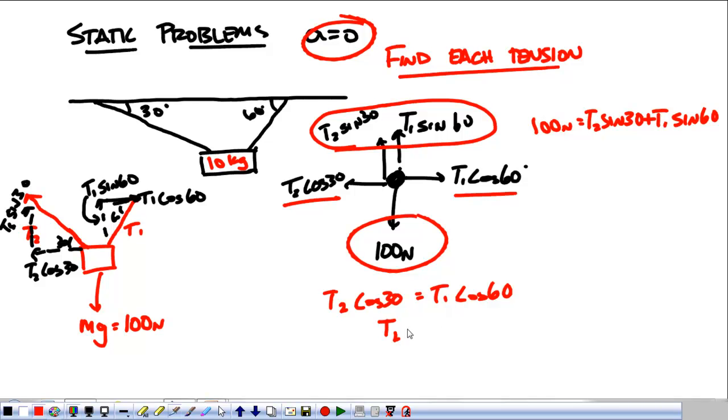So, if we solve for T2, we've got T2 is equal to T1 cosine 60 over cosine 30. So, what I can do, and you're going to hate this because it's a lot of math. I got 100 newtons equal to, I'm going to substitute that in for T2.